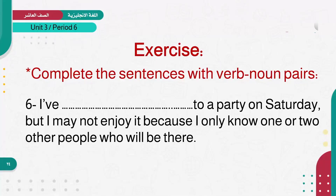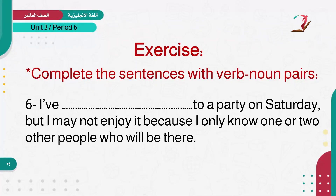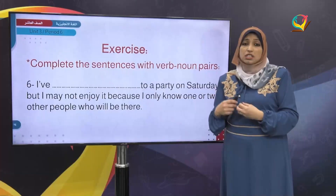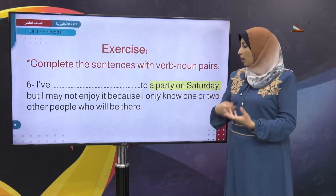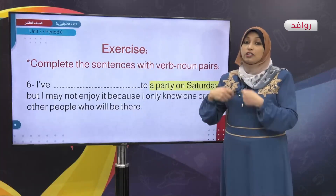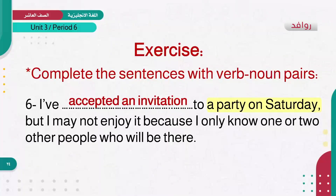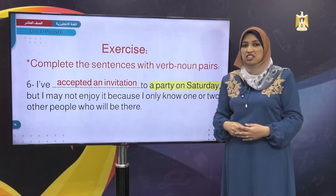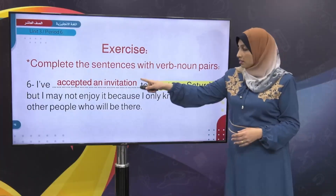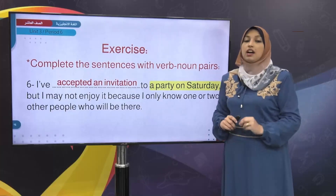The last sentence: 'I've __ to a party on Saturday, but I may not enjoy it because I only know one or two other people who will be there.' The answer is 'accepted an invitation.' Notice we have 'I've,' which requires the past participle — 'accepted.' Despite accepting the party invitation, the person may not enjoy it because they don't know many people there.